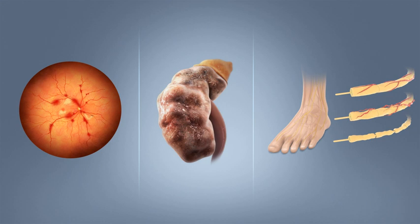Damage to the kidneys, known as diabetic nephropathy, can lead to tissue scarring, urine protein loss, and eventually chronic kidney disease, sometimes requiring dialysis or kidney transplantation. Damage to the nerves of the body, known as diabetic neuropathy, is the most common complication of diabetes. The symptoms can include numbness, tingling, pain, and altered pain sensation, which can lead to damage to the skin.